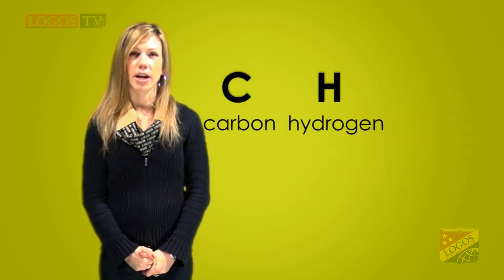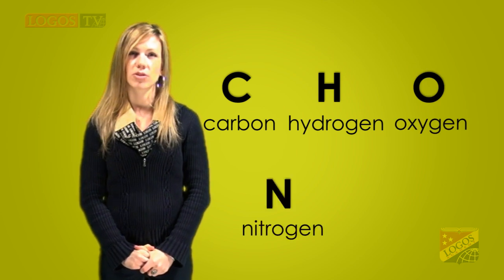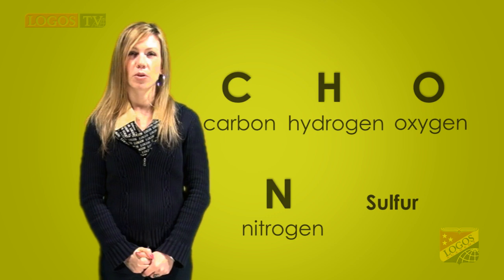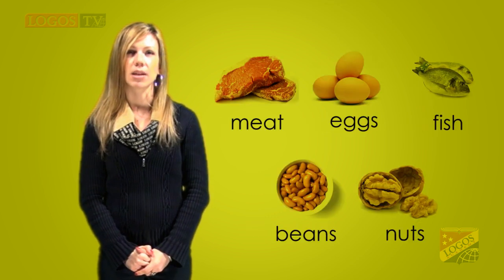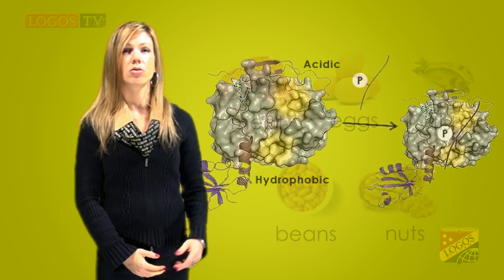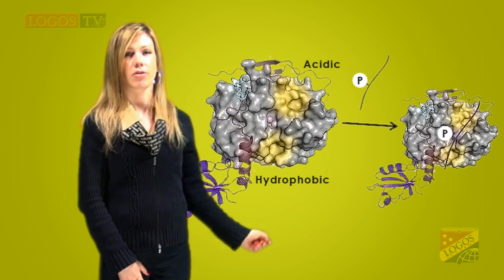Proteins are large organic molecules made of carbon, hydrogen, oxygen, nitrogen, and, at times, sulfur. Foods high in proteins include meat, eggs, fish, nuts, and beans. This slide also shows the structure of a protein at the molecular level.